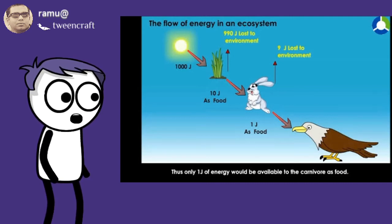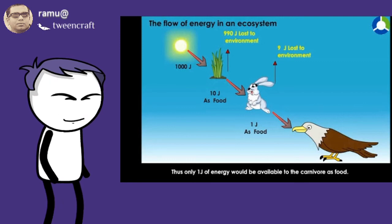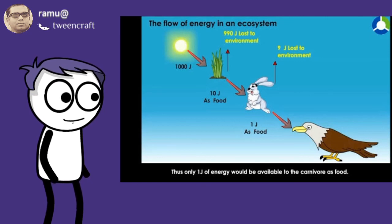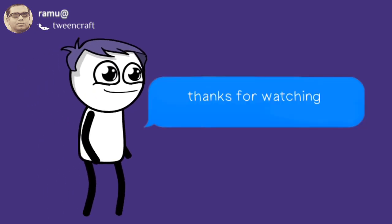In this way, the energy from the sun flows from green plants to herbivores, and from herbivores to carnivore animals.